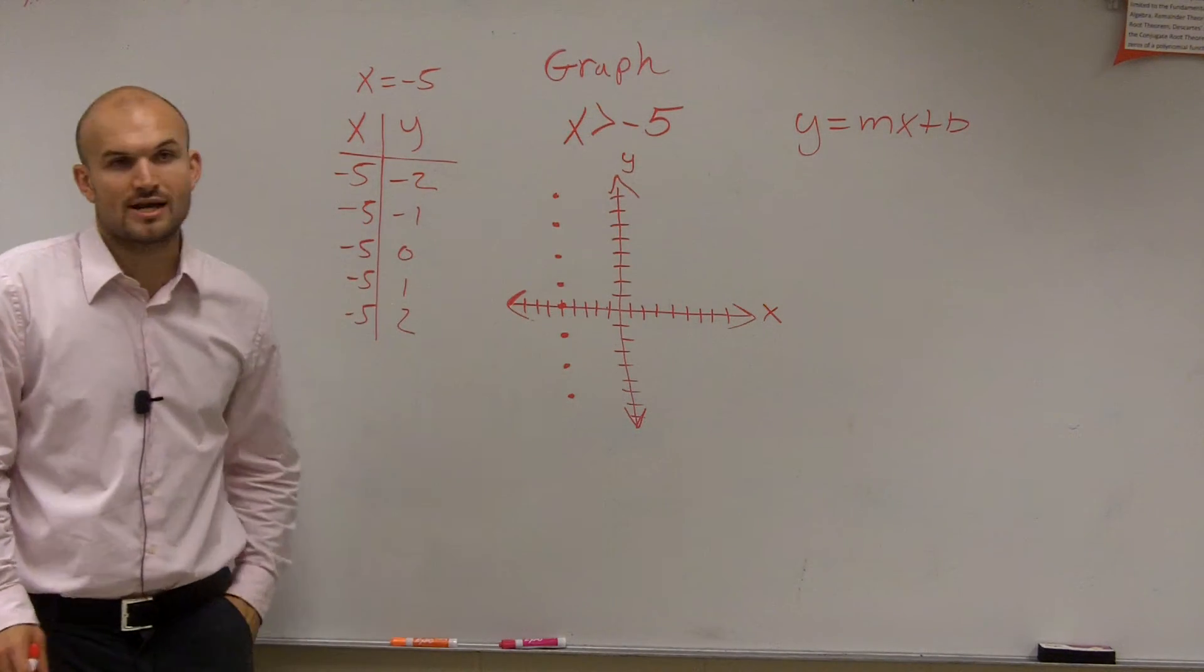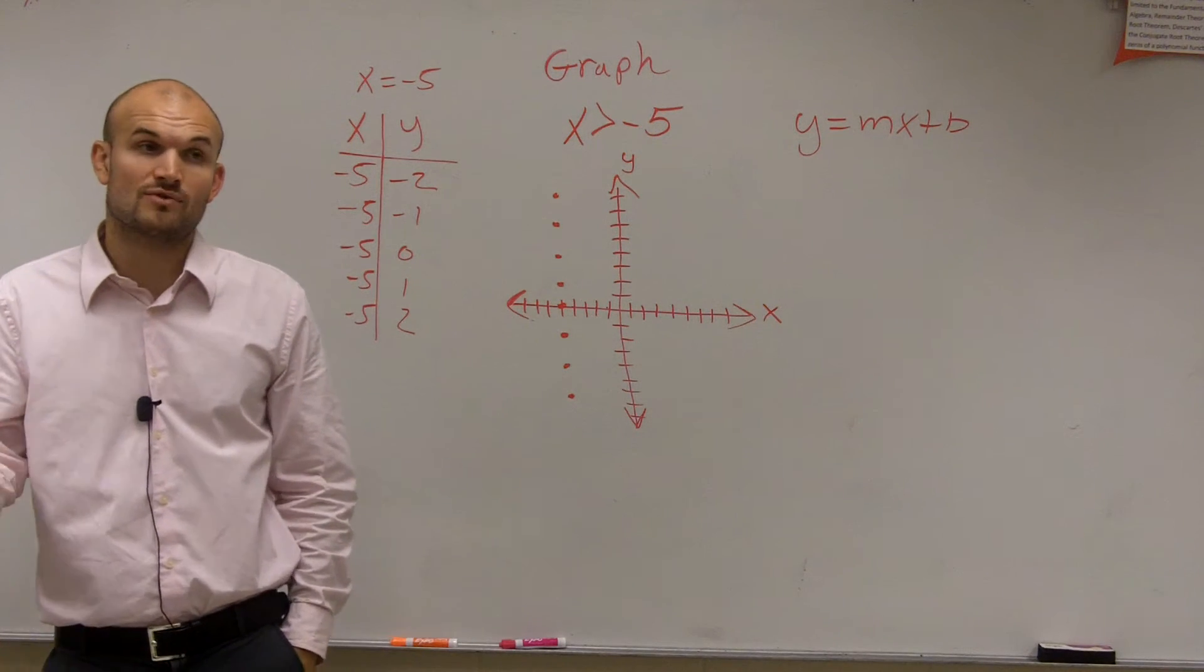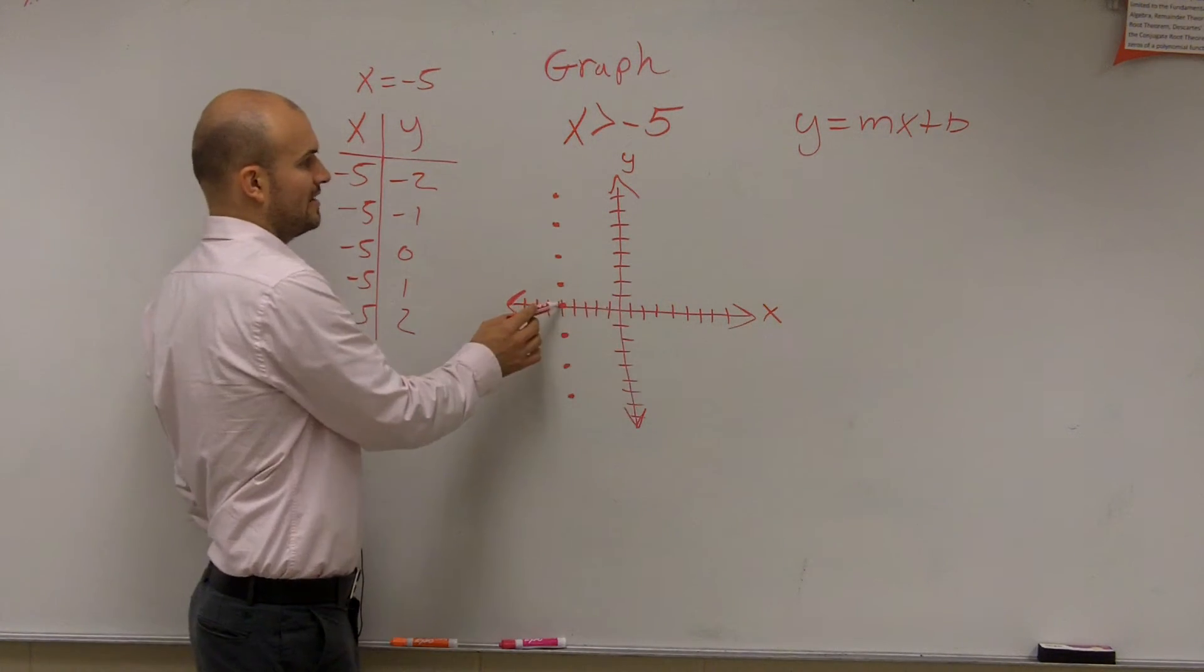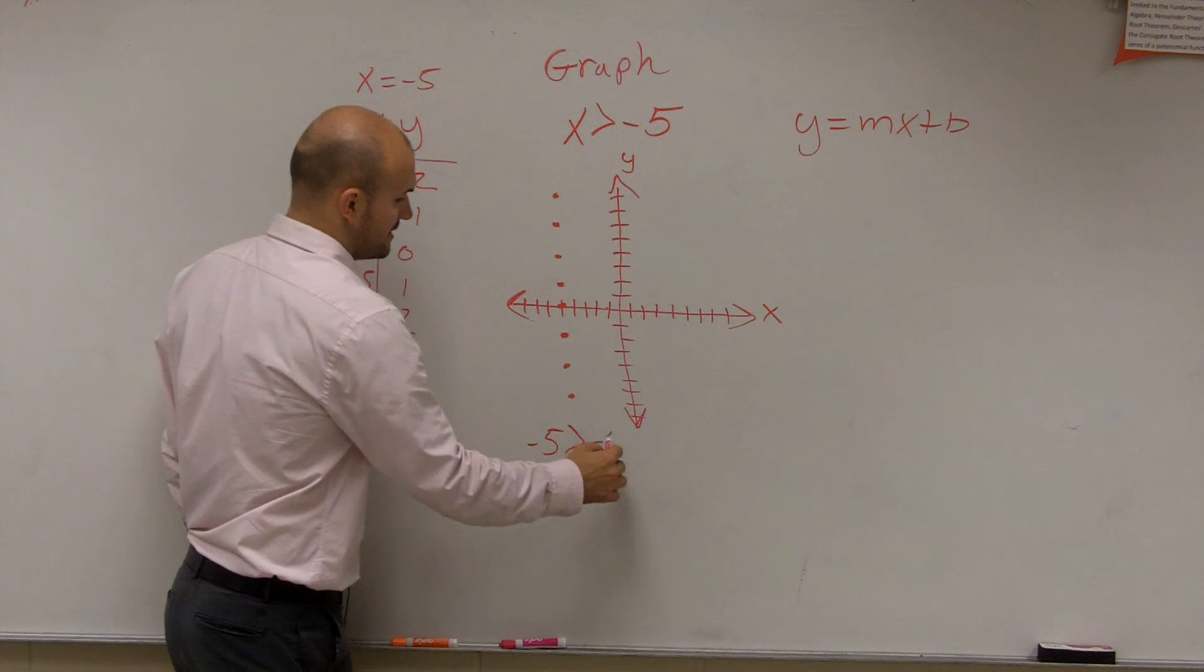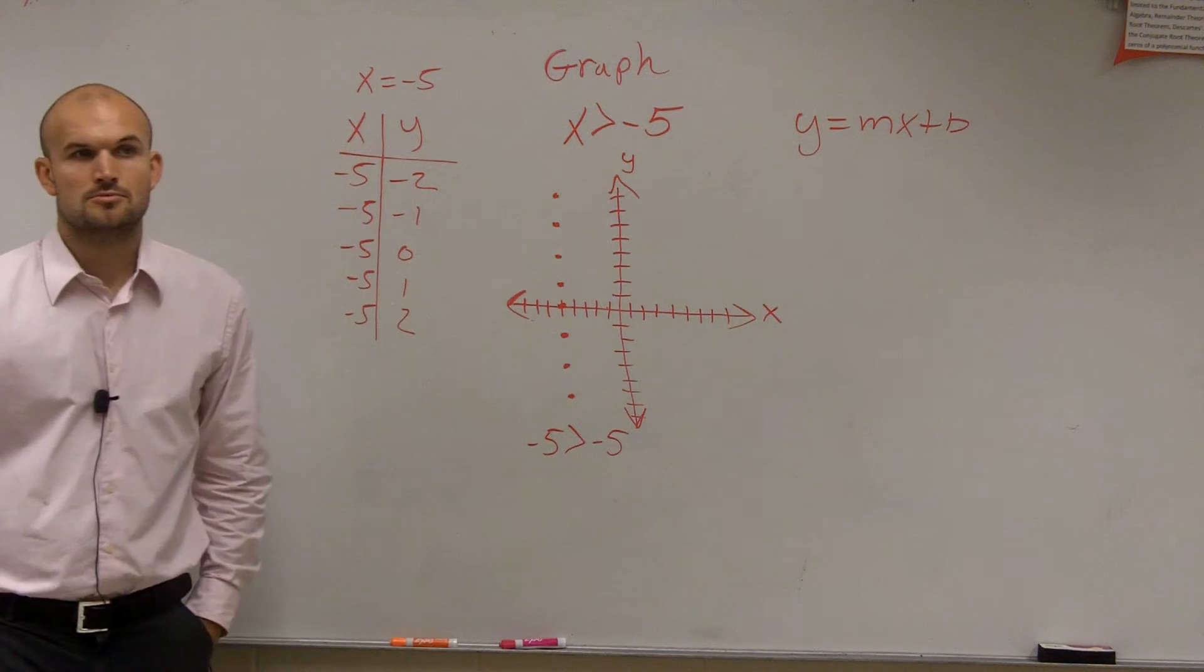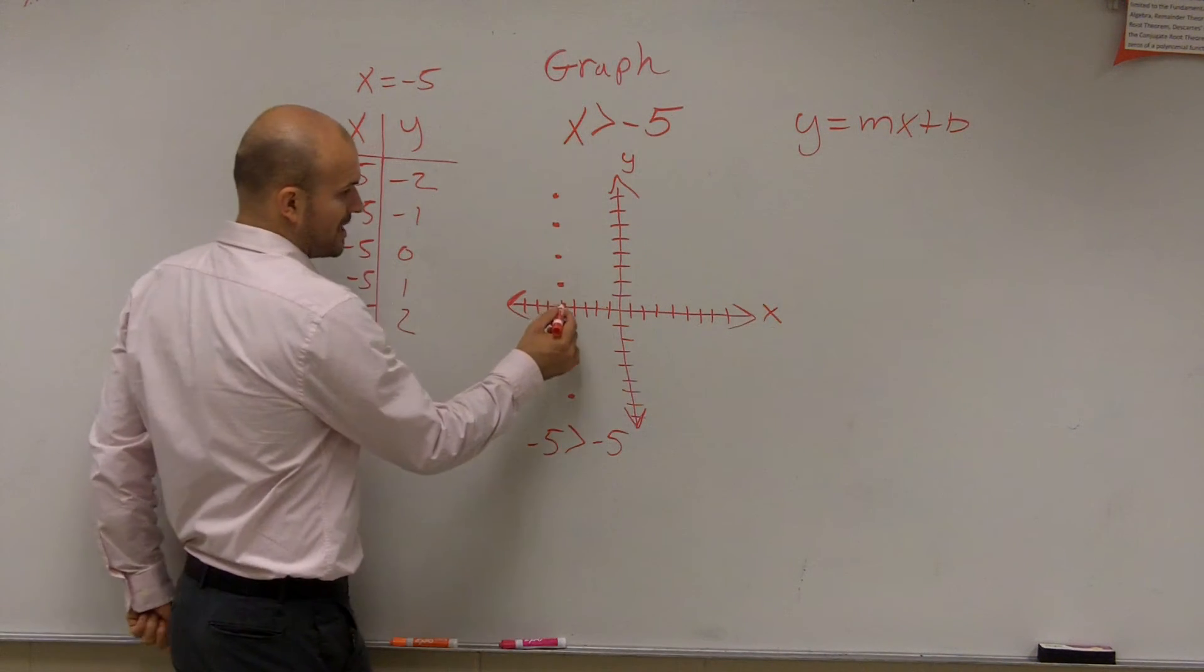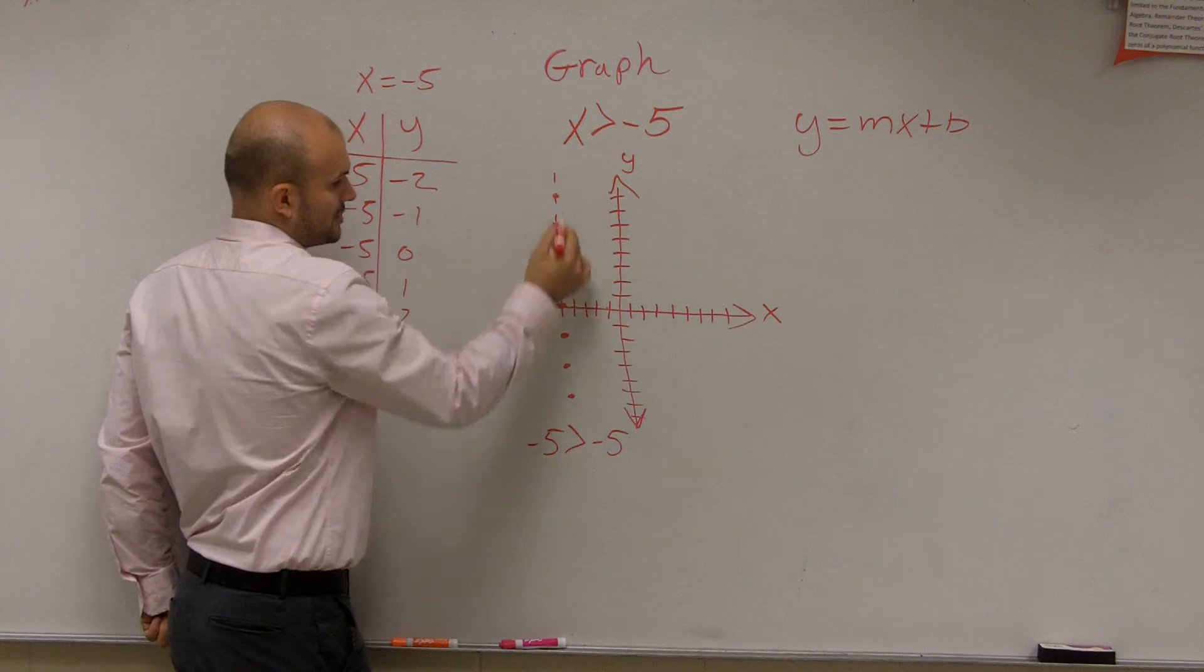However, we want to graph x is greater than or equal to, or x is greater than negative 5. So the first thing I notice is I can always plug in negative 5. Is negative 5 greater than negative 5? False. False. Therefore, this is going to be a dashed line.